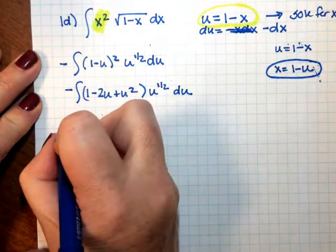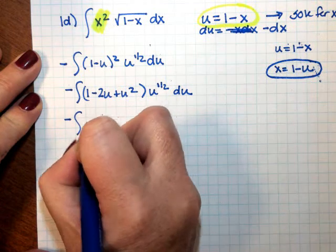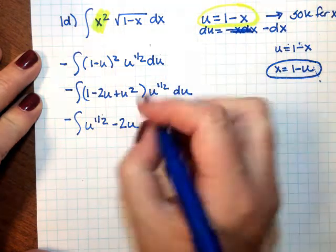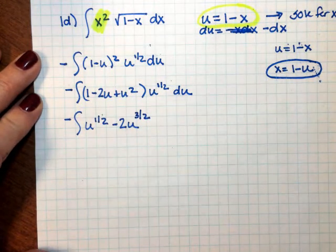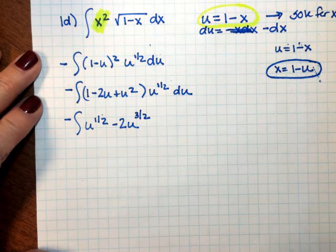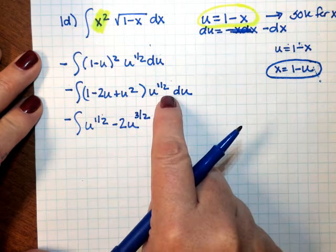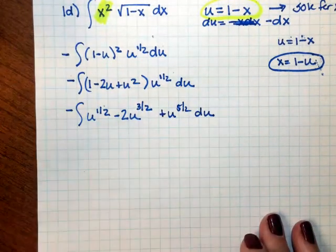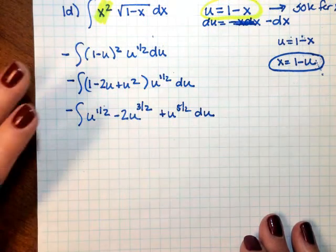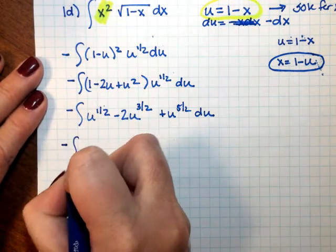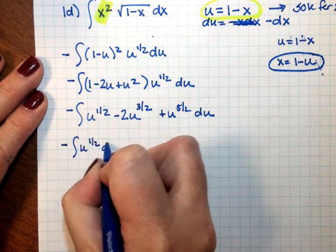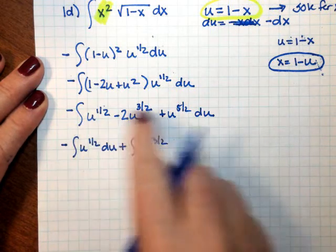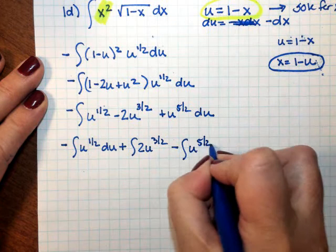Now I need to distribute that u to the 1 half, so I have the negative integral of u to the 1 half minus 2u — when I have u to the first times u to the 1 half, that gives me u to the 3 halves, since 1 plus 1 half is 3 halves. And then u squared times u to the 1 half gives me plus u to the 5 halves times du. Integrating term by term, I have the negative integral of u to the 1 half, plus the integral of 2u to the 3 halves, minus the integral of u to the 5 halves du.